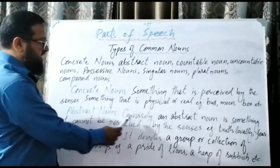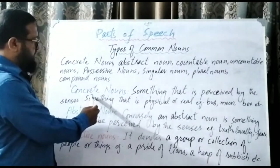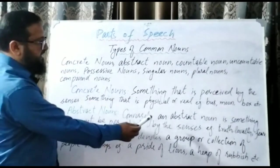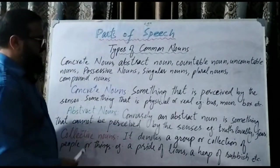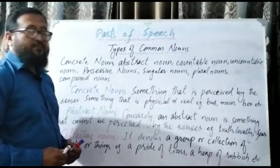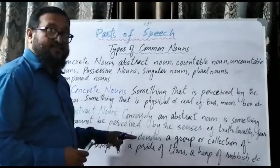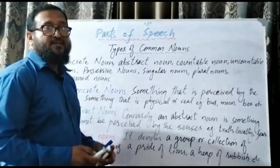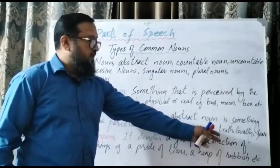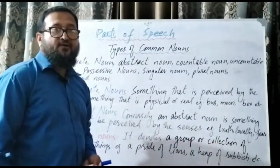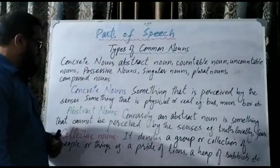Next are abstract nouns. These are the converse of concrete nouns. An abstract noun is something that cannot be perceived by the senses — you cannot physically touch it, you can only imagine it. Examples include: truth, loyalty, fear, love, hate. These kinds of things are considered abstract nouns.